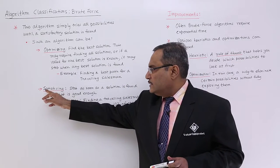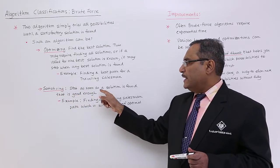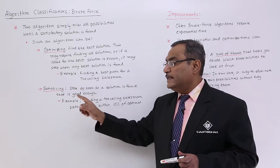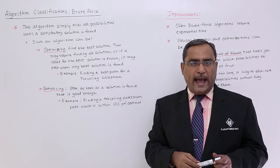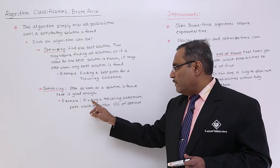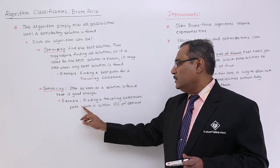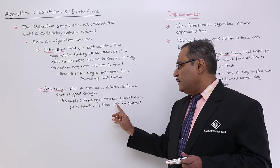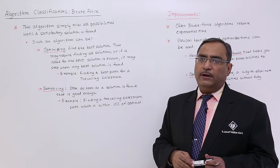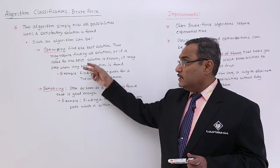What about satisficing? Stop as soon as a solution is found that is good enough to get accepted. Example: finding a traveling salesman path which is within 10% of the optimal value. So these are the two types of this particular brute force algorithm.